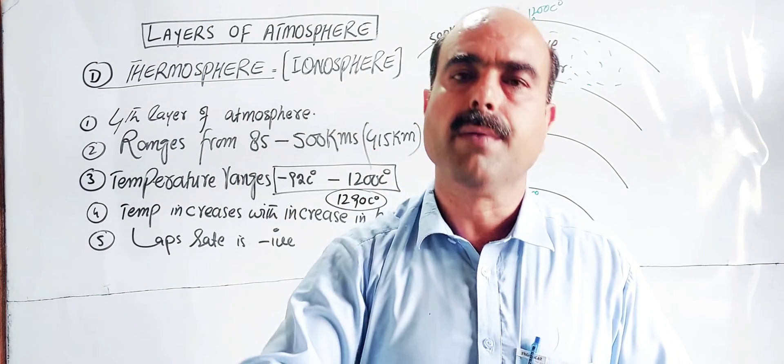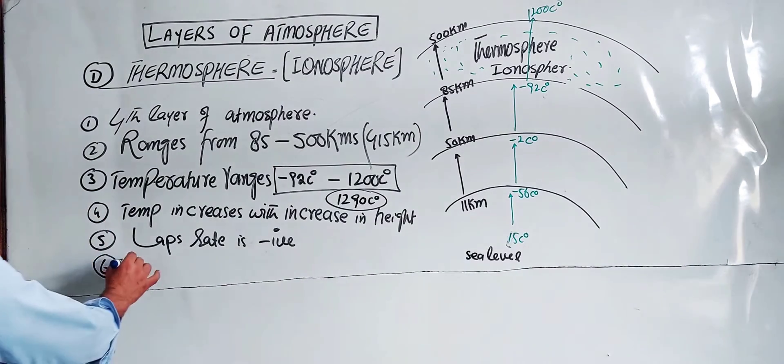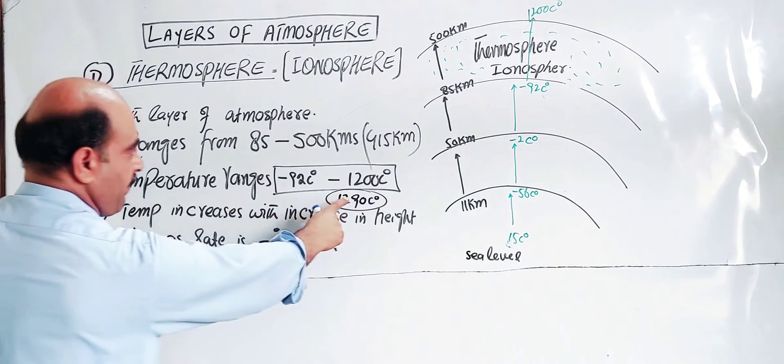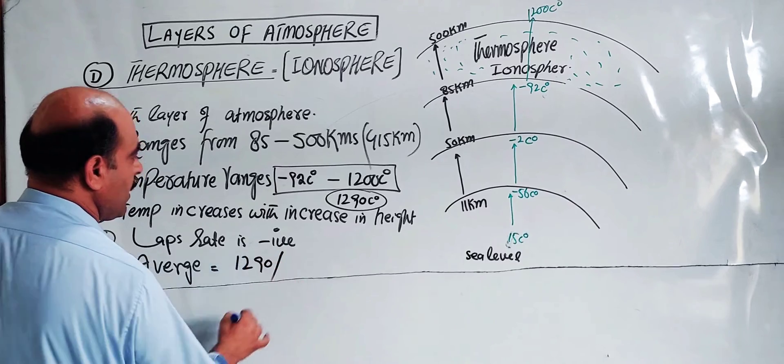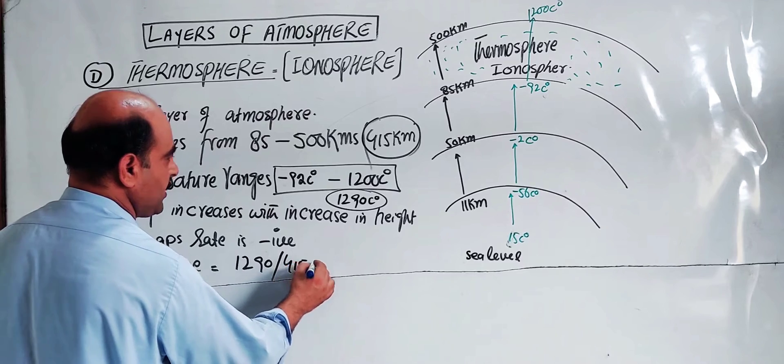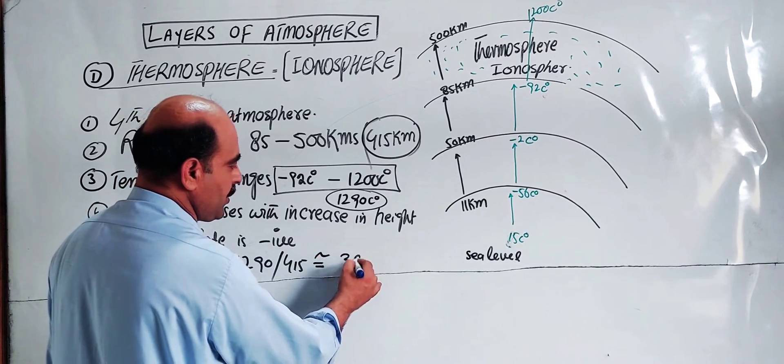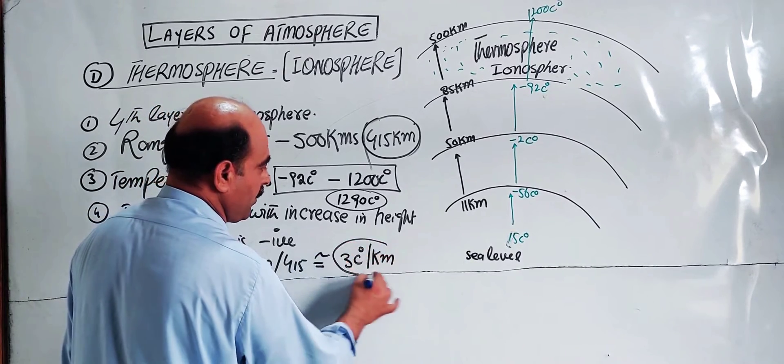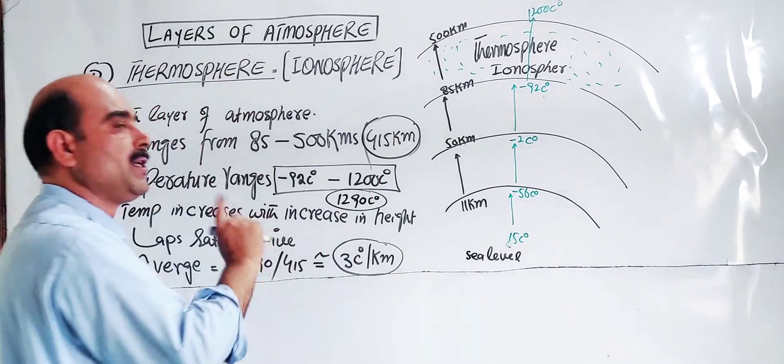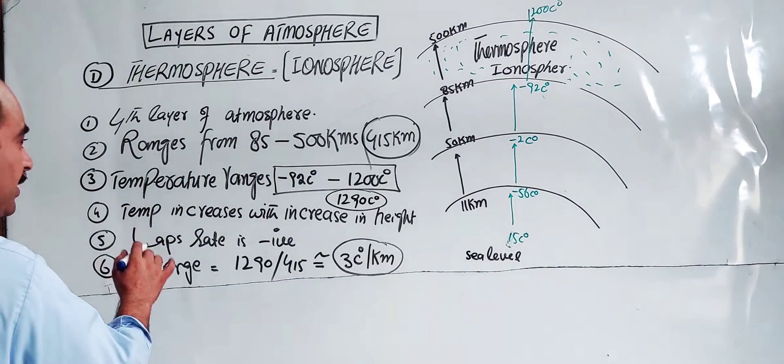The average increase in temperature: total temperature change is 1292 degrees C over approximately 415 kilometers, which equals approximately 3 degrees C per kilometer. So in the thermosphere, for every one kilometer increase in height, temperature increases by about 3 degrees C on average.